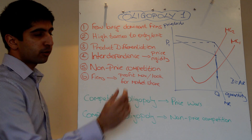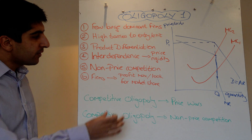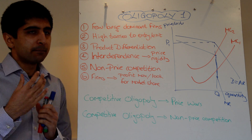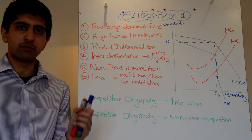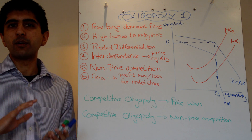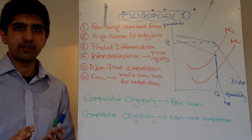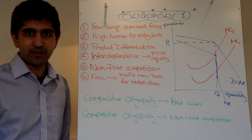So even though firms want to profit maximise, they must consider the expected reactions of rivals — they can't just act unilaterally. Next video: game theory.